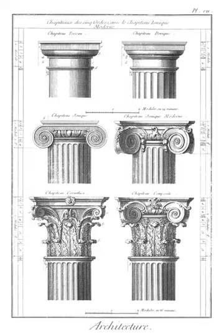Peristyle: a continuous porch of columns surrounding a courtyard or garden. In ecclesial architecture, the term cloister is used.